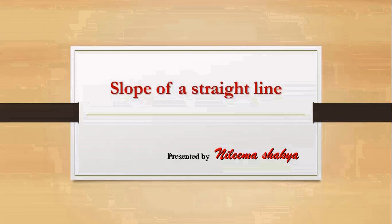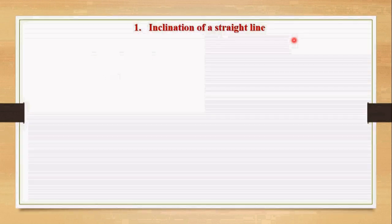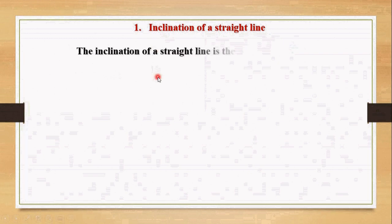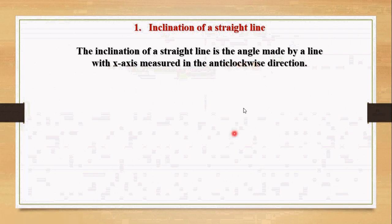Hello students. In this video we will be discussing about slope of a straight line. Let's start with the definition of inclination of a straight line. The inclination of a straight line is the angle made by a line with x-axis measured in the anticlockwise direction.